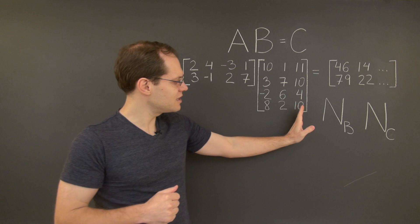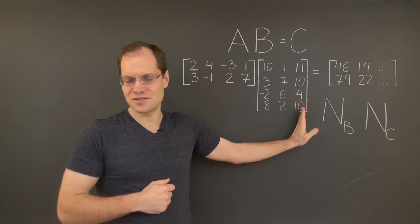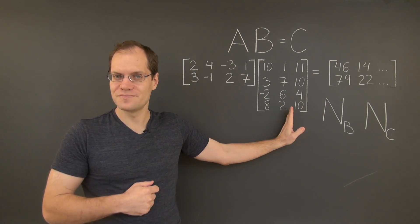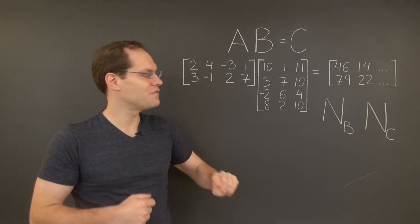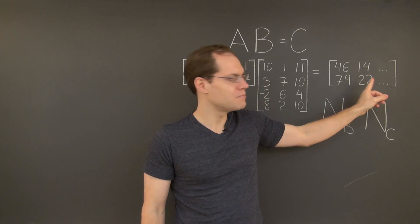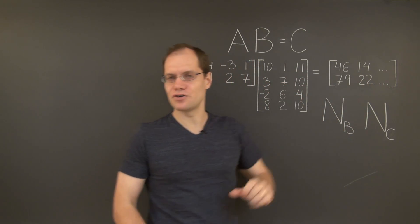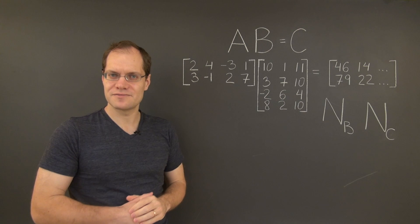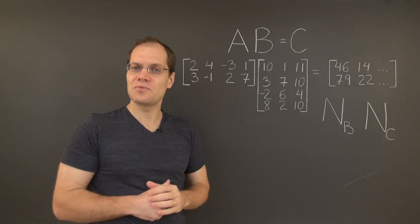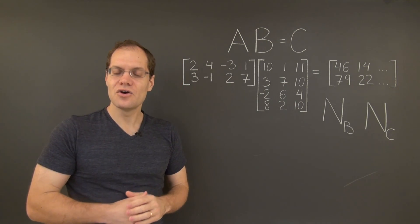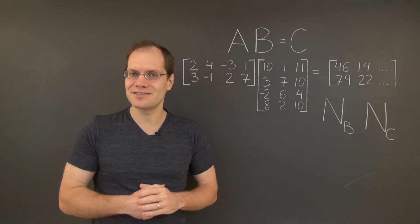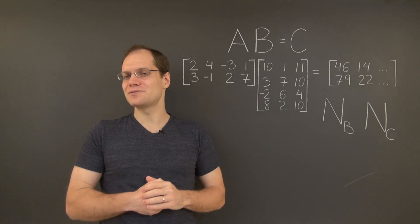It's because the third column of the matrix B is the sum of the first two. And therefore, the third column of the matrix C must be the sum of its first two columns. To understand why that is, we have to recall the column-wise perspective on matrix multiplication.